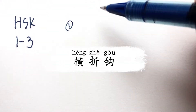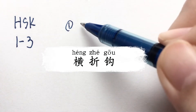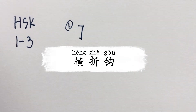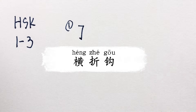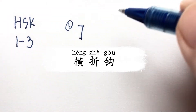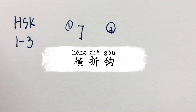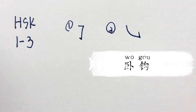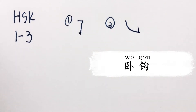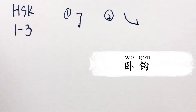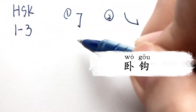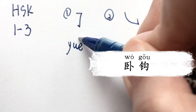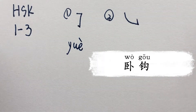First stroke is 横折勾 — a horizontal line and turn, and then a hook at the end, 横折勾. The second one is also called 横折勾: a line to the right side and then a hook, 横折勾.